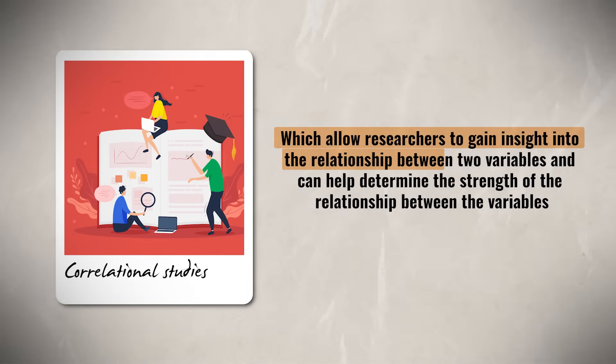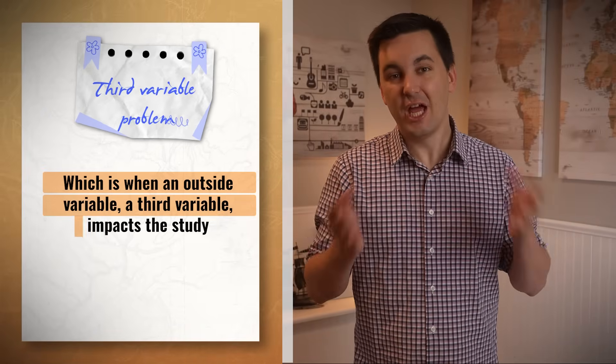Correlational studies allow researchers to gain insight into the relationship between two variables and can help determine the strength of that relationship. Correlational studies do not show cause and effect — correlation does not mean causation. The only way to gain insight into causation is through a controlled experiment. Non-experimental methods are always at risk for a third variable impacting the study, known as the third variable problem, where an outside variable not accounted for in the study's parameters impacts the results.